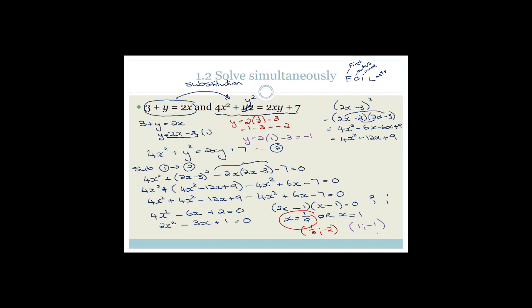It's a long question — worth six marks in this exam, usually six or seven marks. You need to show knowledge of simultaneous solving, perform substitution, multiply out brackets, factorize, and then remember to substitute back in to get both coordinate pairs. Please be careful of that.